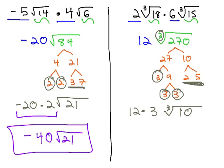Multiplying the 12 times 3 gives us 36 times the cube root of 10.